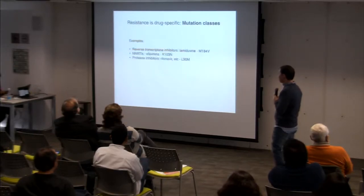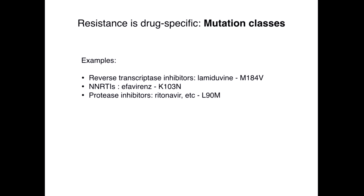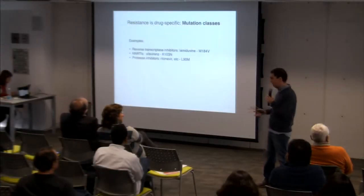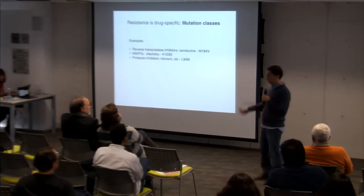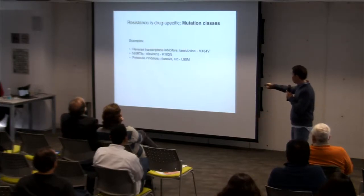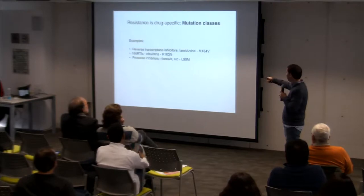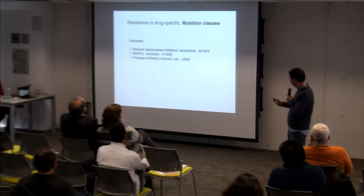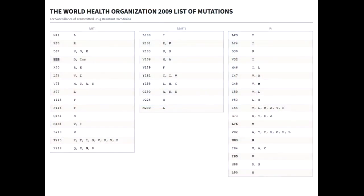We have mutation classes — several examples depending on which drug we're looking at, and these have been identified and are very well known. We can tell just from looking at the sequence whether we are looking at a resistance strain or not.